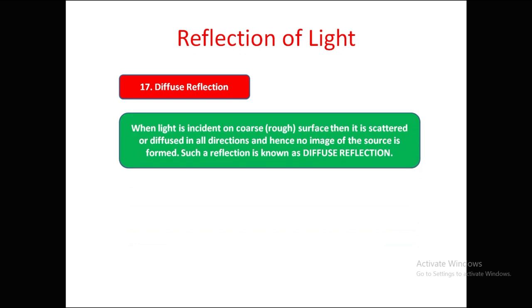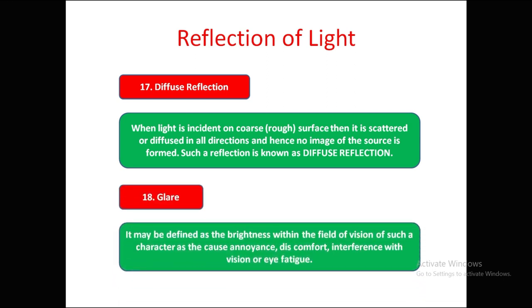Diffused reflection occurs when light is incident on a rough surface. The light is scattered or diffused in all directions, and hence no image of the source is found. Such a reflection is known as diffused reflection.